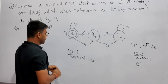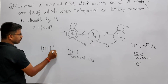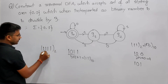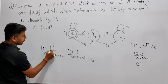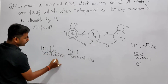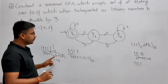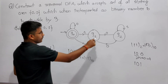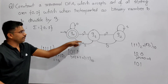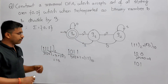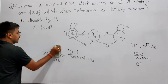Now take 1111: that is 3, then 3×2+1=7, then 7×2+1=15. 15 is divisible by 3 so remainder is 0 — it should come to Q0. Trace: 1→Q1, 1→Q0, 1→Q1, 1→Q0. Yes, it comes to Q0. So all numbers divisible by 3 come to Q0 because their remainder is 0.